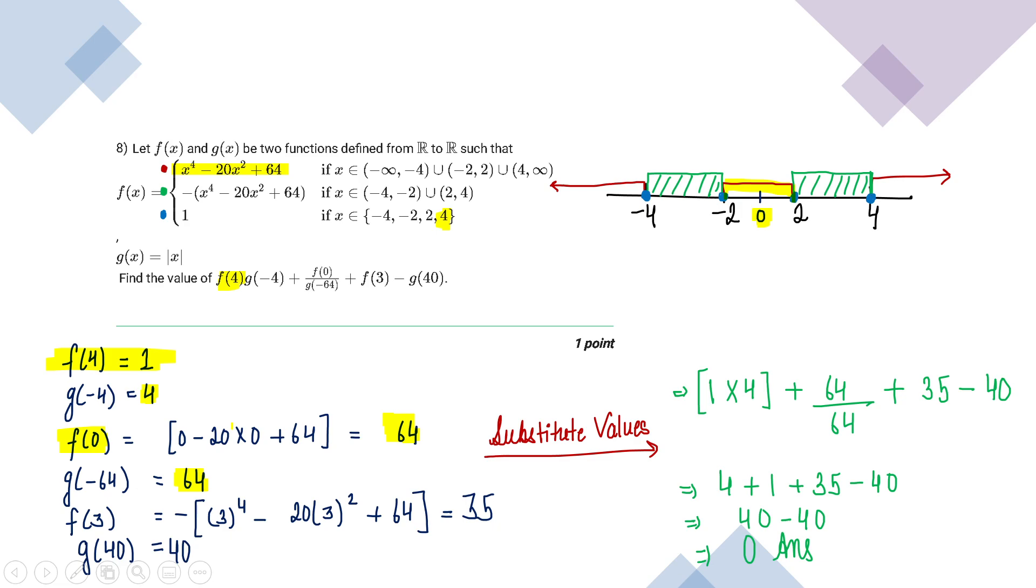f of 3. So 3 lies between 2 and 4, correct? So it's between green region. And what is green region? My second equation or expression. So in the second expression, I will be putting x as 3 and find out f of 3, that is 35. g of 40 will come out as 40.